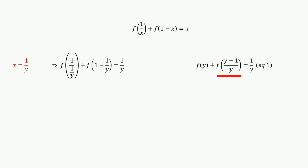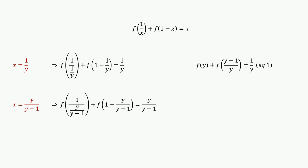Let this be equation 1. From equation 1, we don't know the value of f of (y minus 1) over y. To find that value, we need to substitute x equals y over (y minus 1). Then the equation becomes f of (y minus 1) over y plus f of 1 minus y over (y minus 1) equals y over (y minus 1).